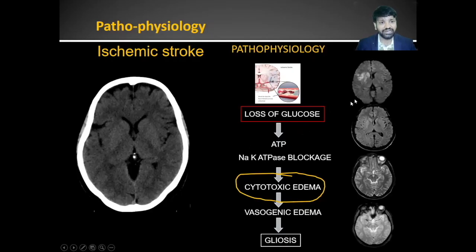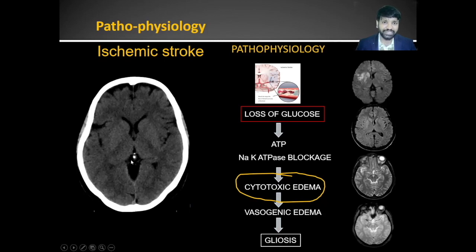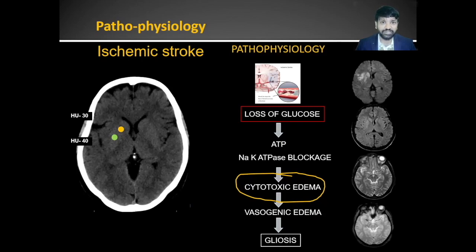We have either CT or multiple sequences in MR. With MR we have multiple sequences which depict the different stages of pathophysiology, whereas with CT it is a little tough because we have only one sequence and appearances on CT depend solely on density differences. So when you are looking at CT, we should make the most of what is available.